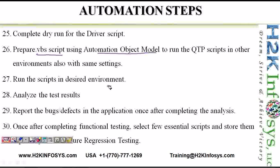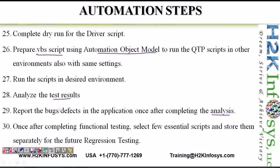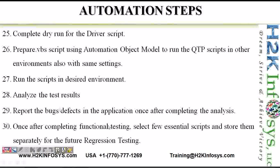Then we run these scripts in the desired environment, analyze the test results, and report the bugs or defects in the application. QTP is used for functional automation testing. We select a few essential scripts and store them separately for future regression testing. Regression testing is conducted to make sure that all defects identified during functional testing have been fixed by the developer. These were the different automation steps to follow when using QTP or any other automation testing tool.